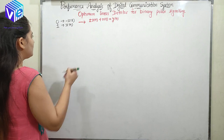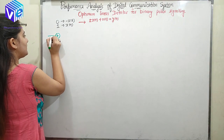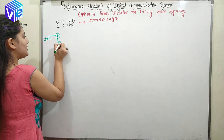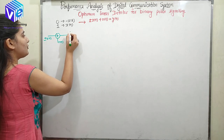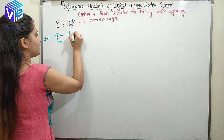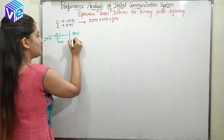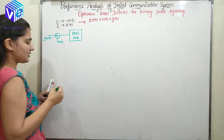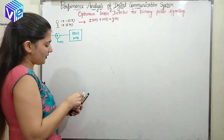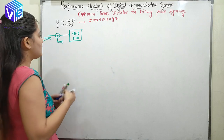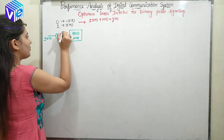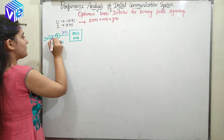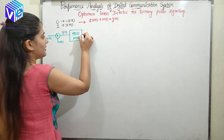Looking at the diagram of the receiver: plus or minus x(t) is added to n(t) and now it is going to the receiver which has the transfer function H(f) in the frequency domain or h(t) in the time domain. The output y(t) is plus or minus x(t) plus n(t).